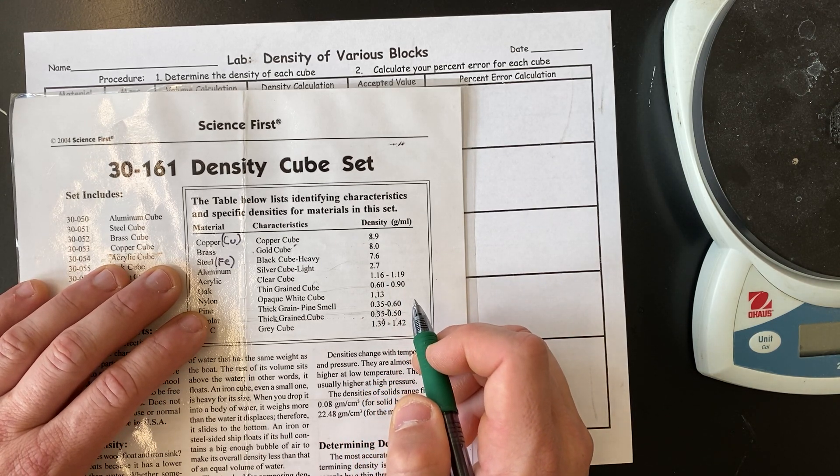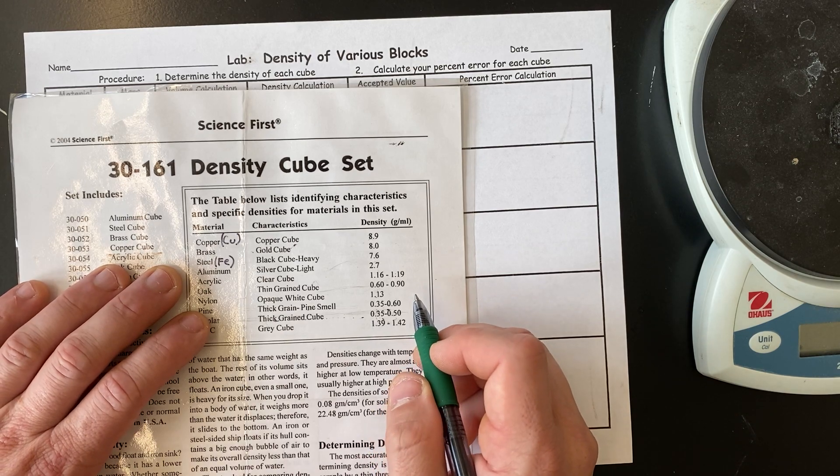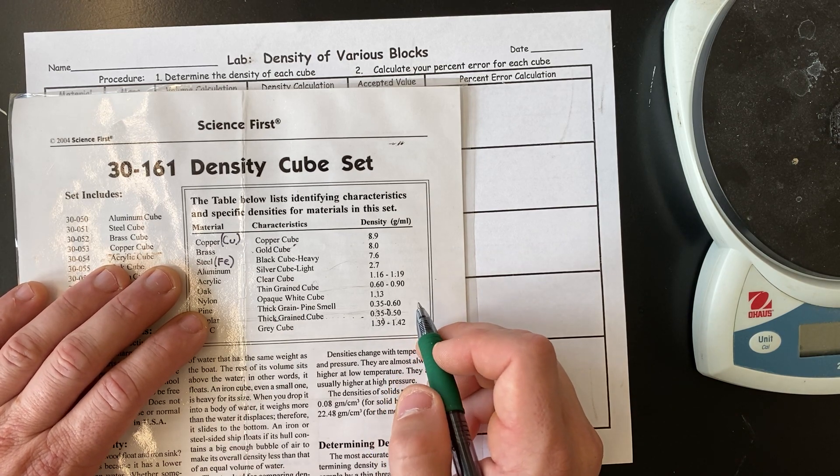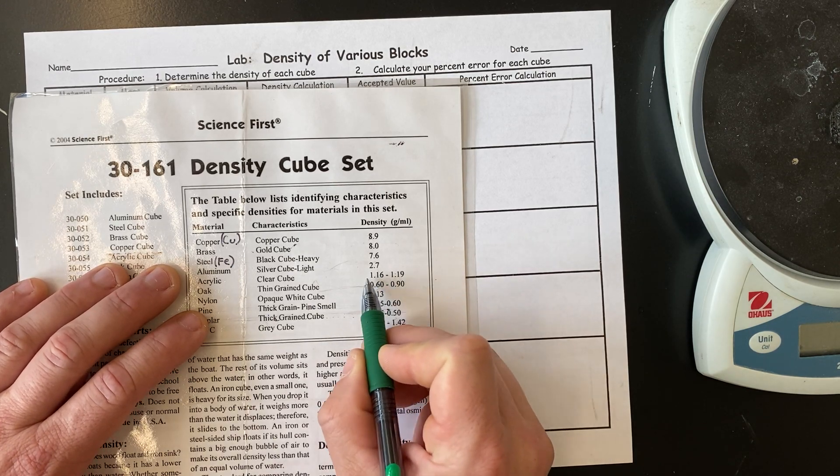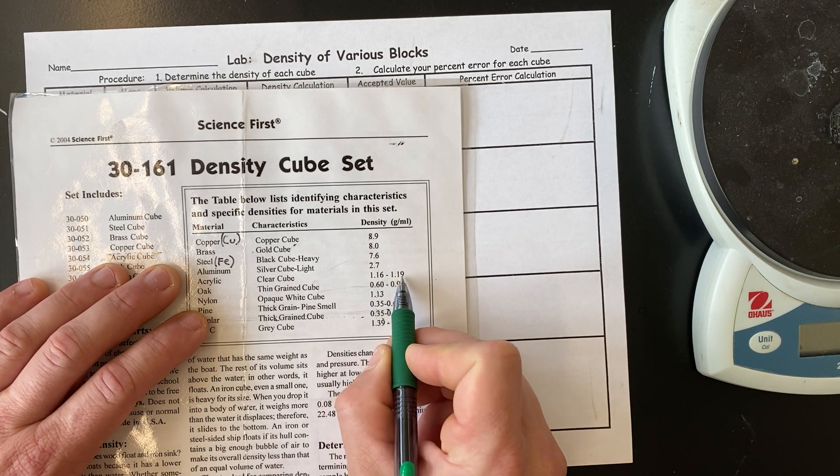And that has a range, because depending on how the tree grew, it could grow with, like, finer grains closer together, making it more dense. Or if it grew really fast, the grains would be really far apart, and it would make it slightly less dense. So, what we'll do for these ranges, is we're just going to average these two numbers together.